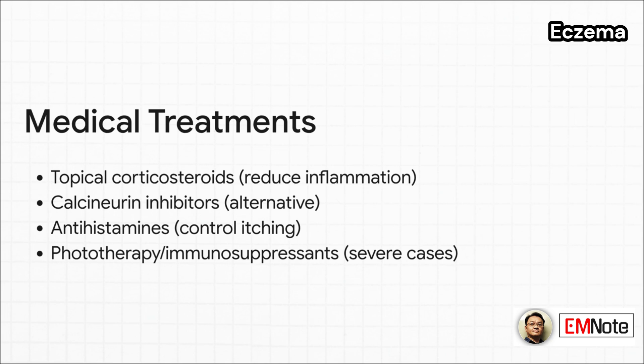For active flares, we turn to medical treatments. Topical corticosteroids are first-line agents for reducing inflammation. Topical calcineurin inhibitors are a good alternative, particularly for sensitive areas. Antihistamines can help control the itching. And for more severe cases, we might need to escalate to phototherapy or systemic immunosuppressants.